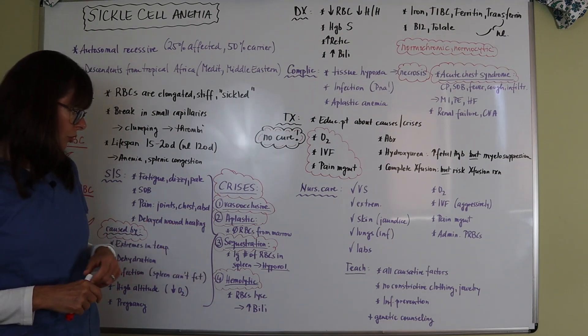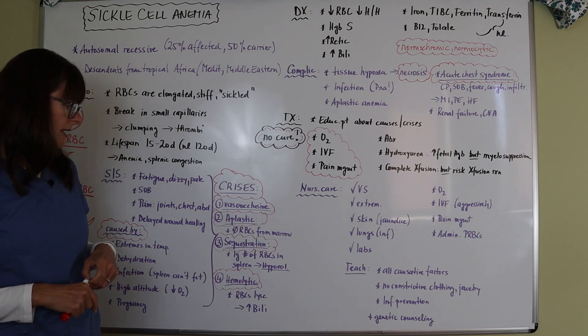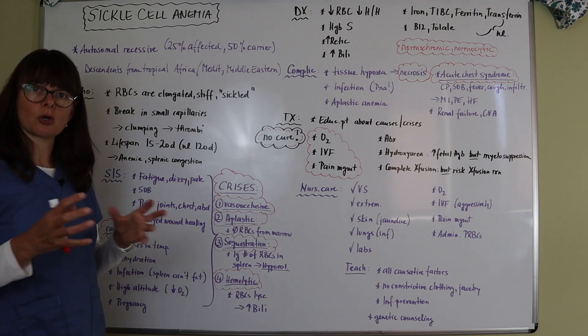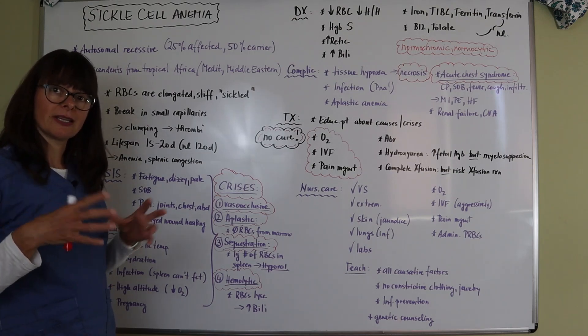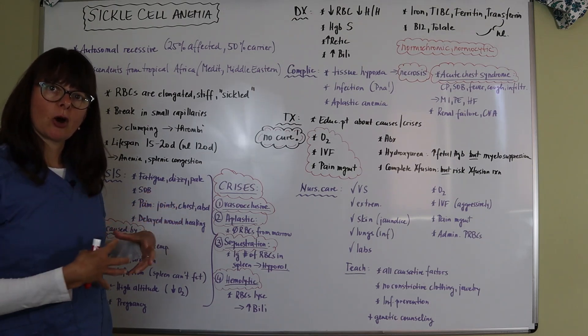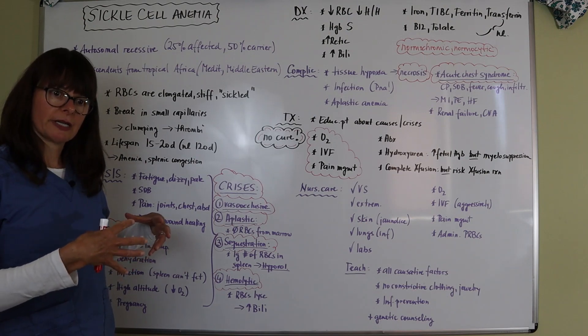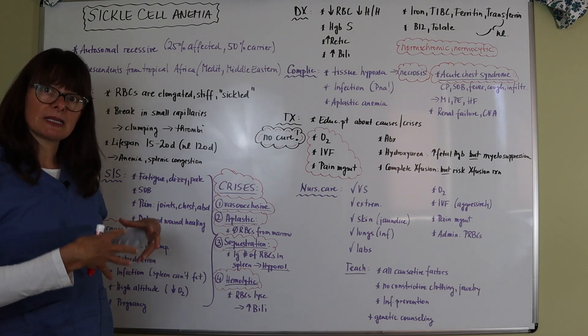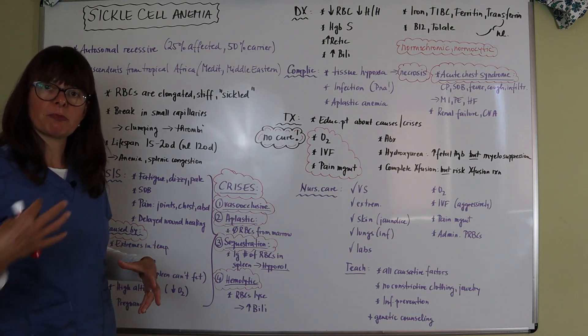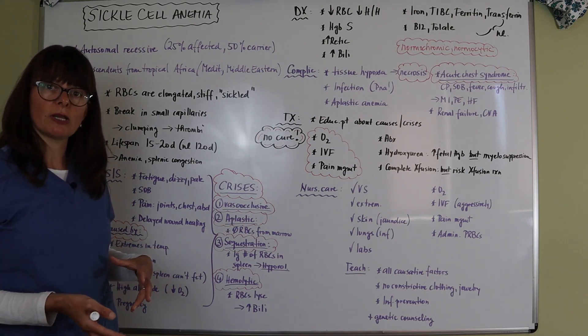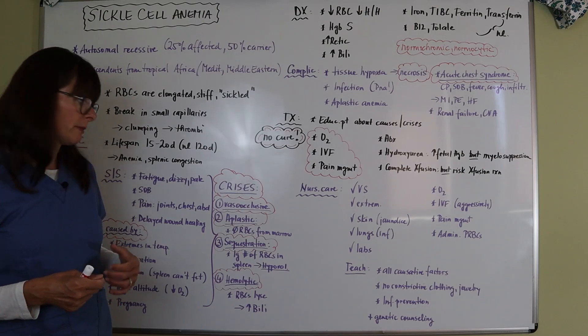Then we have sequestration crises, which means that now the spleen is so congested with these red blood cells that are being cycled out that it really can't function. All that blood volume is concentrated in the spleen, it gets congested and the rest of the body becomes dehydrated. So the patient can become hypovolemic and also go into hypovolemic shock.